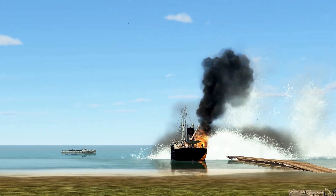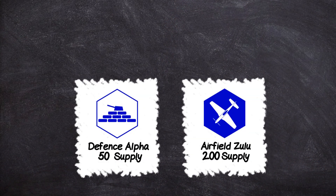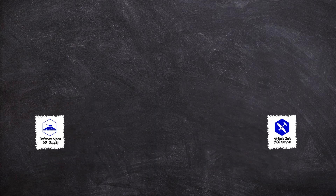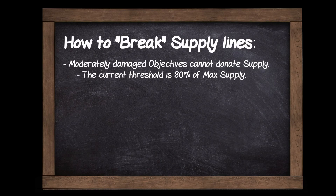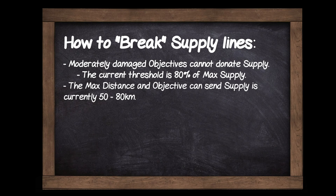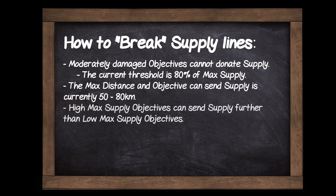There are also limits on how far an objective can send its supply. For example, Airfield Zulu may have tonnes of supply, but it's 500km away from Defence Alpha, so it can't send that supply. The maximum distance an objective can send its supply is generally around 50 to 80km, with the maximum distance governed by the sender's supply level — so high supply targets (300 level) can send supply further than low supply objectives (100 supply).